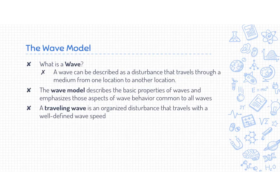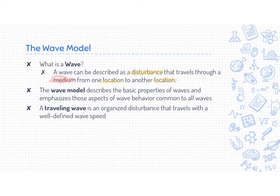So what is a wave? A wave is not a physical thing — it's actually just energy. A wave can be described as a disturbance that travels through a medium from one spot to another. We'll use this term medium: a medium is the physical thing that the wave travels through. It could be water, it could be air, it could be space, depending on what we're talking about.